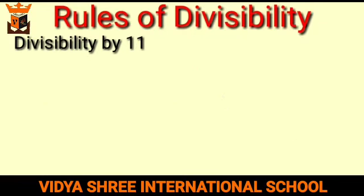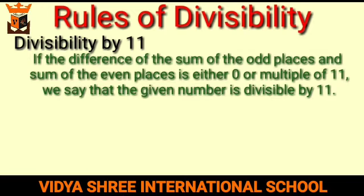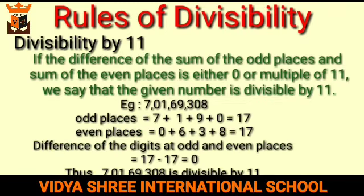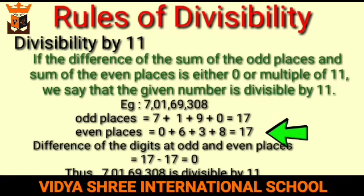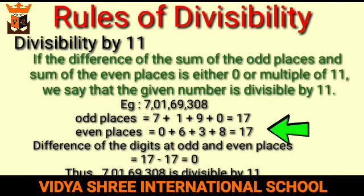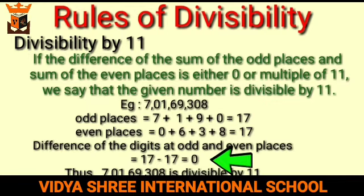Next is divisibility by 11. If the difference of the sum of the digits at odd places and the sum of the digits at even places is either 0 or a multiple of 11, we say that the given number is divisible by 11. For example, take the number 7,169,308 — the digits at the odd places are 7, 1, 9 and 0, and the digits at the even places are 0, 6, 3 and 8. After finding the respective sums and their difference, we get 17 − 17 = 0. So 7,169,308 is divisible by 11.